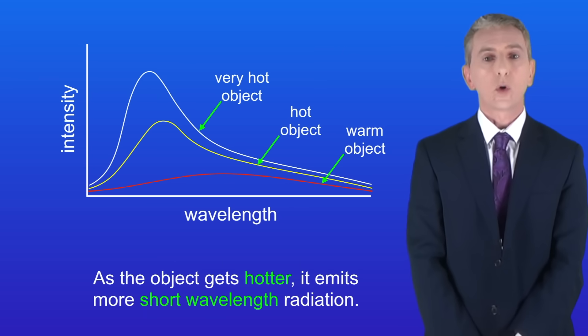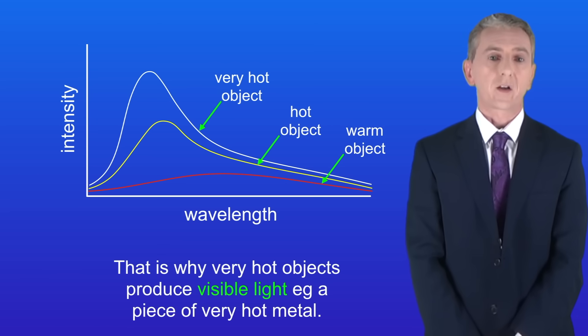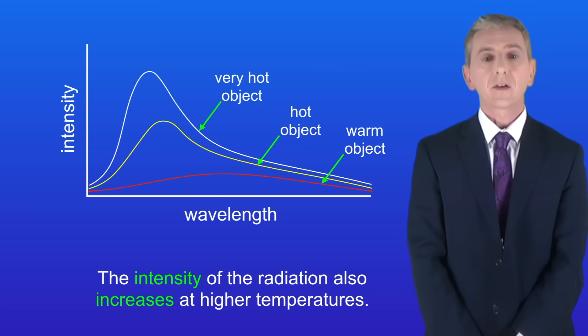As the object gets hotter it emits more short wavelength radiation, and that's why very hot objects produce visible light, for example a piece of very hot metal. The intensity of the radiation also increases at higher temperatures.